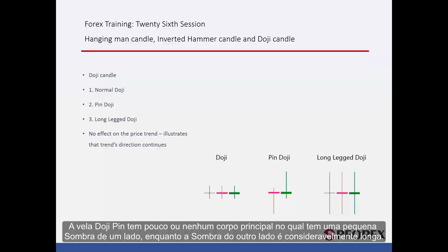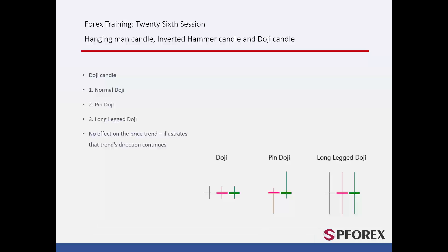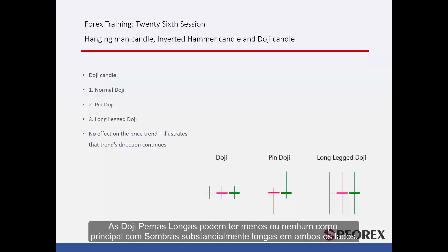Pin Doji Candles have a tiny or no main body with a small shadow on one side, while the shadow on the other side is considerably long. Long Leg Doji Candles may have a minute or no main body, in addition to substantially long shadows on both sides.